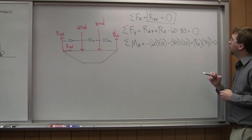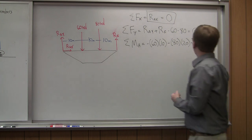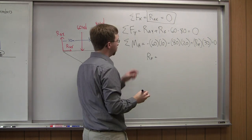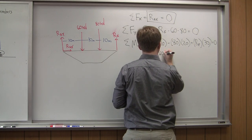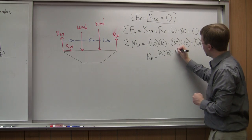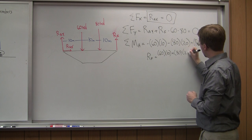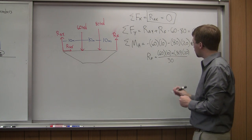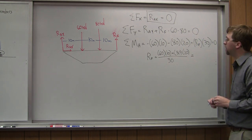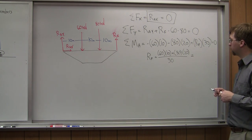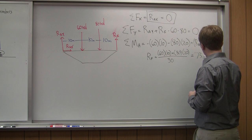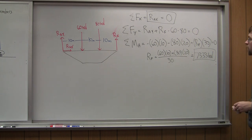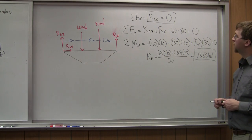Solving the moment equation, RF equals (60 times 10 plus 80 times 20) all over 30. That gives a value of 73.33 kilonewtons — that is the magnitude of the reaction force at F.